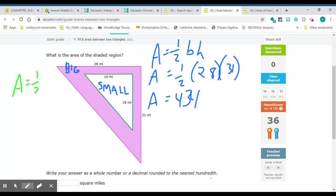One half times 16 is the base, and 18 is the height. When I multiply all those together, I will get 144.